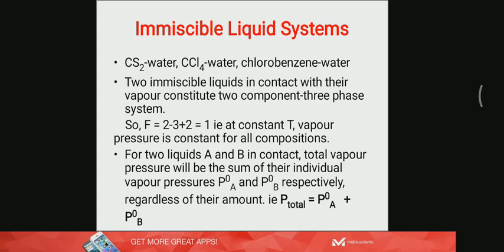So they will remain as two separate layers making up two phases, and also above the liquid surface there will be vapors of both liquids which constitute another phase, that is the vapor phase. So all together it is a two-component, three-phase system. Examples are the CS2-water system, CCl4-water system, and chlorobenzene-water system. You can see that one is a polar liquid, that is water, and the other is an organic or non-polar liquid, which are totally immiscible.